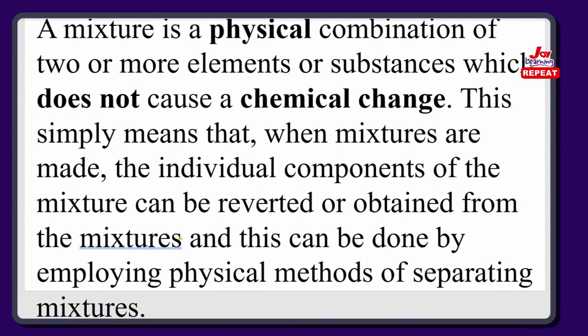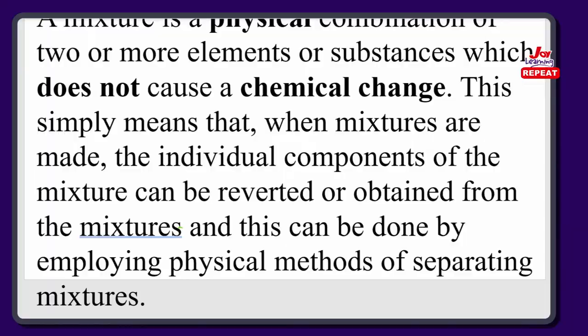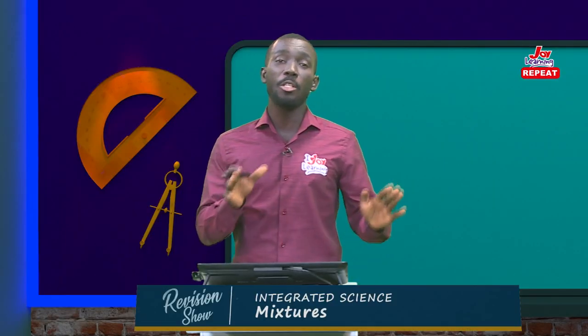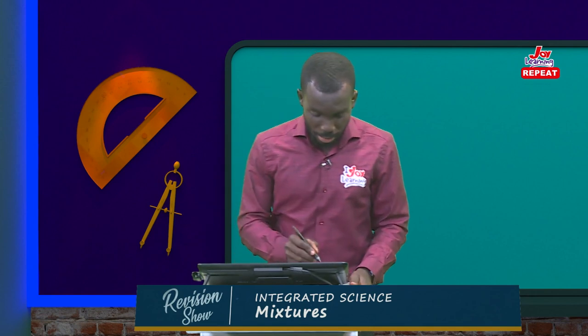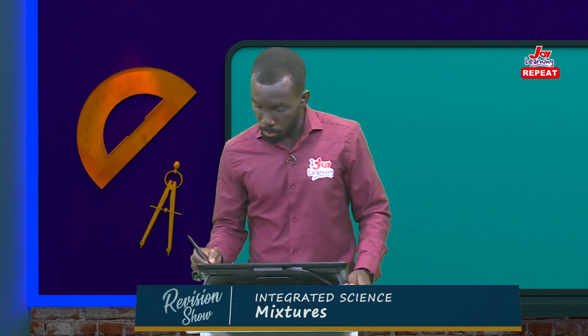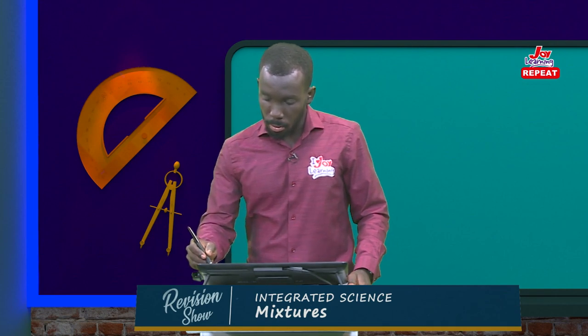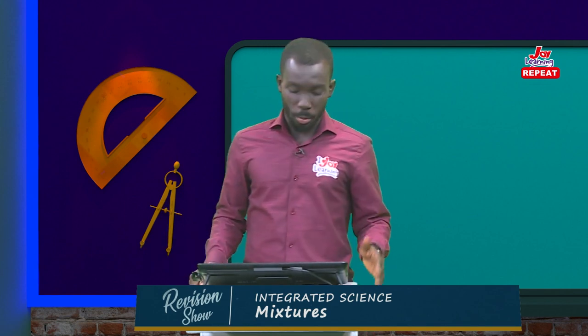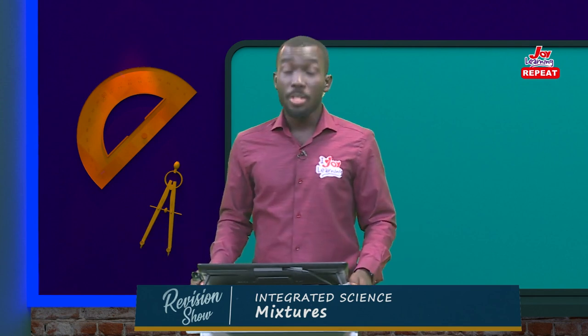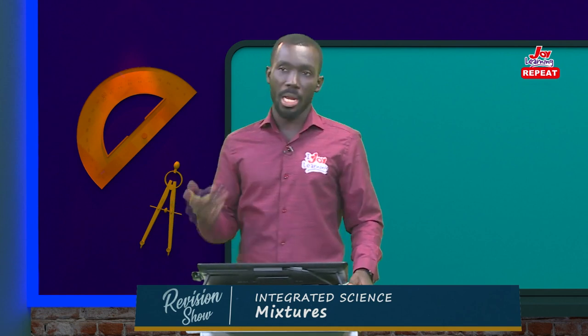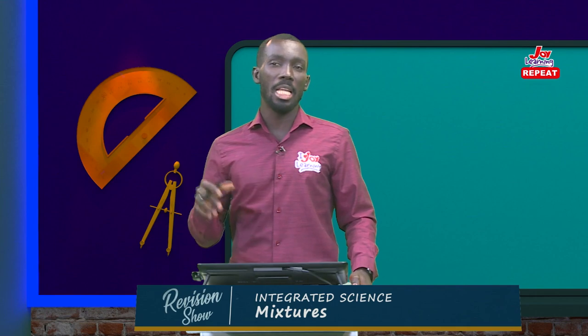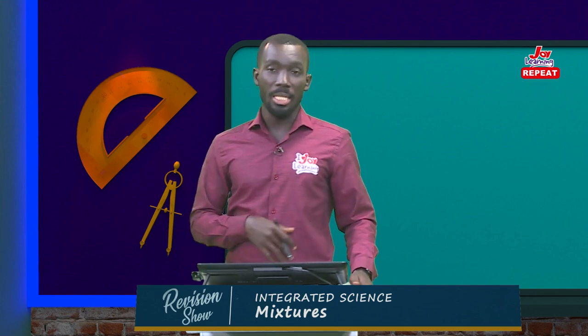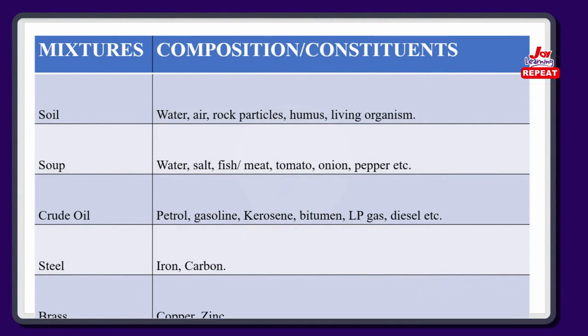The individual components of the mixtures can be recovered by employing physical methods of separation. Now let's look into some common mixtures and what makes them up. We have soil — everybody has seen soil before. Soil is composed of water, air, rock particles, humus, and living organisms. The humus here refers to decayed parts of plants and animals. When they die and decay, they add into the soil, and that is what actually gives soil its dark nature or dark color.